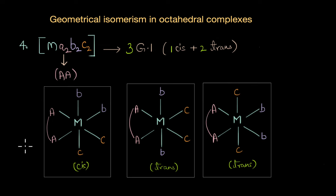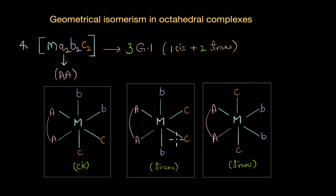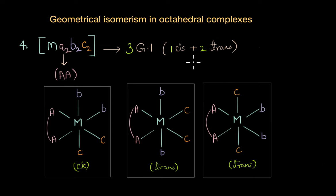This makes sense because a bidentate ligand restricts the number of unique spatial arrangements. In the cis isomer all ligands are adjacent. In one trans isomer, ligands b are opposite to each other; in the other, ligands c are opposite. The bidentate ligand 'aa' cannot be placed opposite to itself, so there is no all-trans isomer. Therefore M(aa)B₂C₂ has three geometrical isomers total.